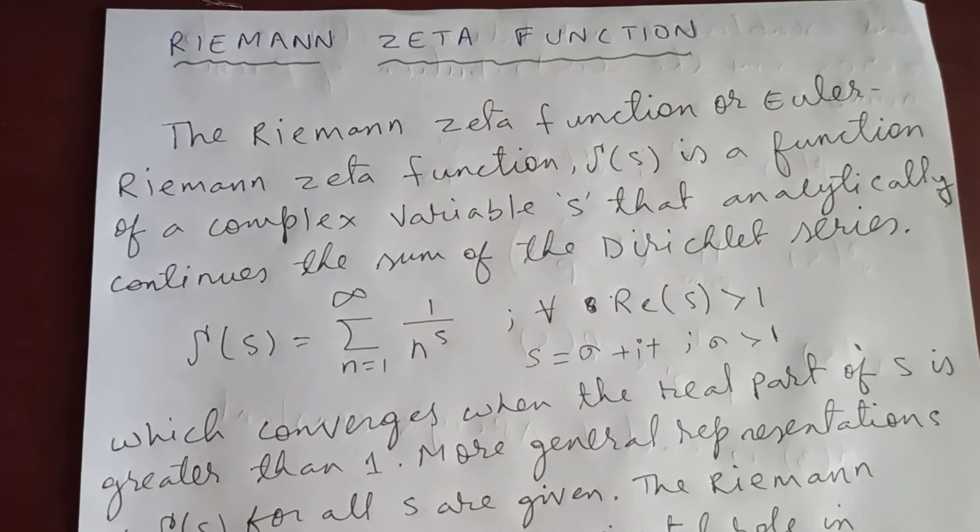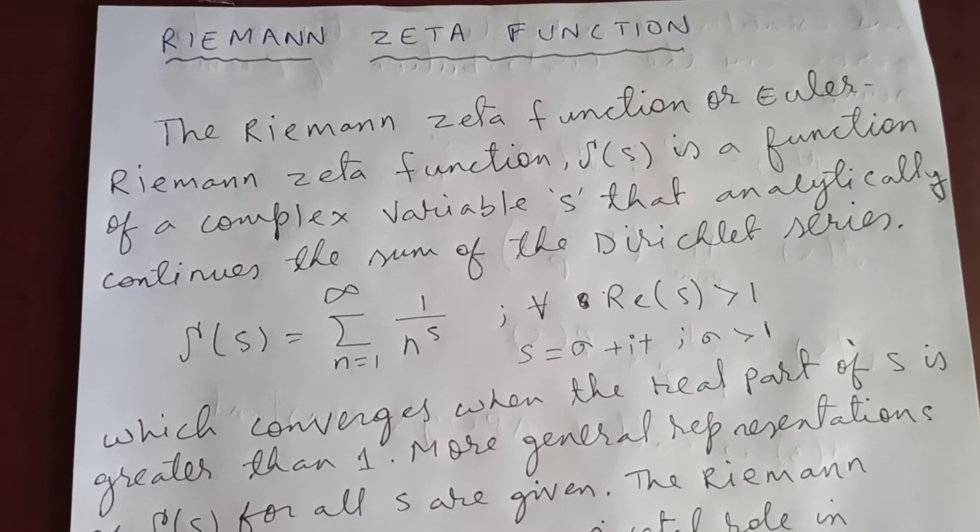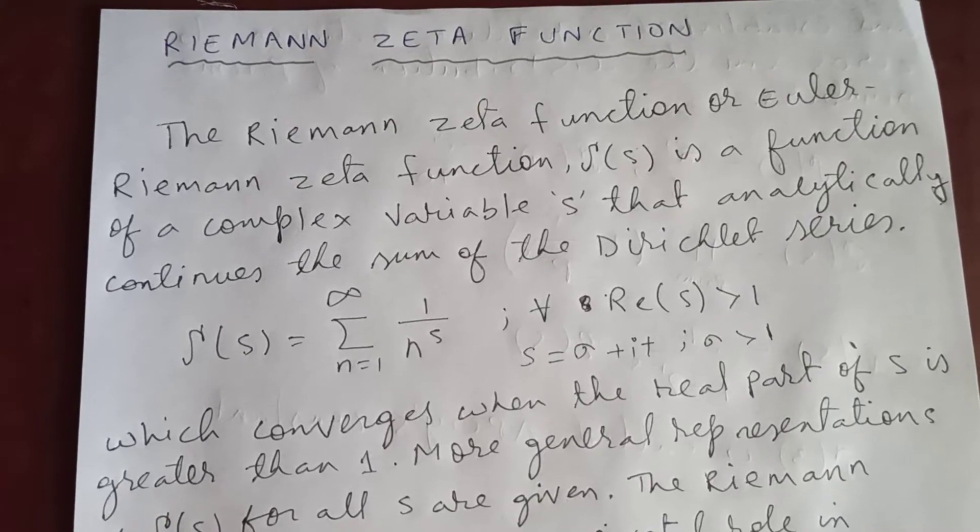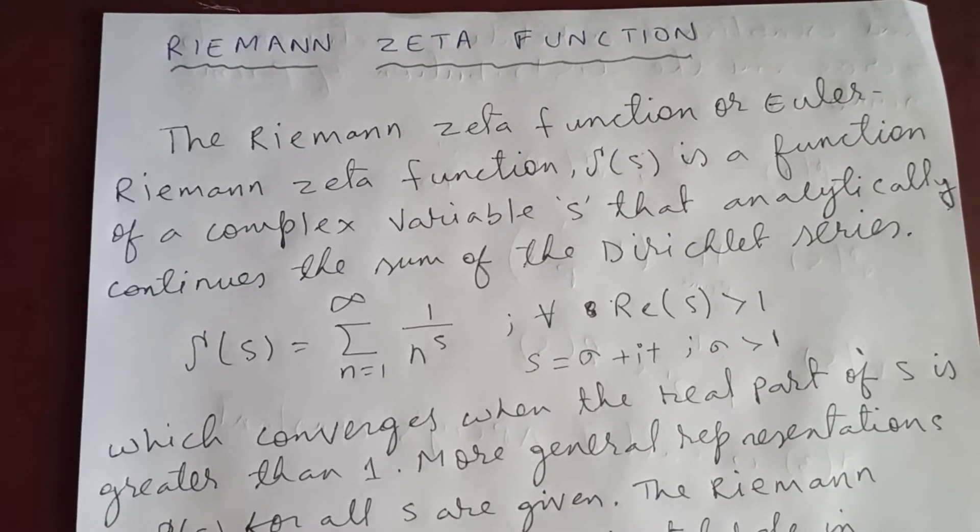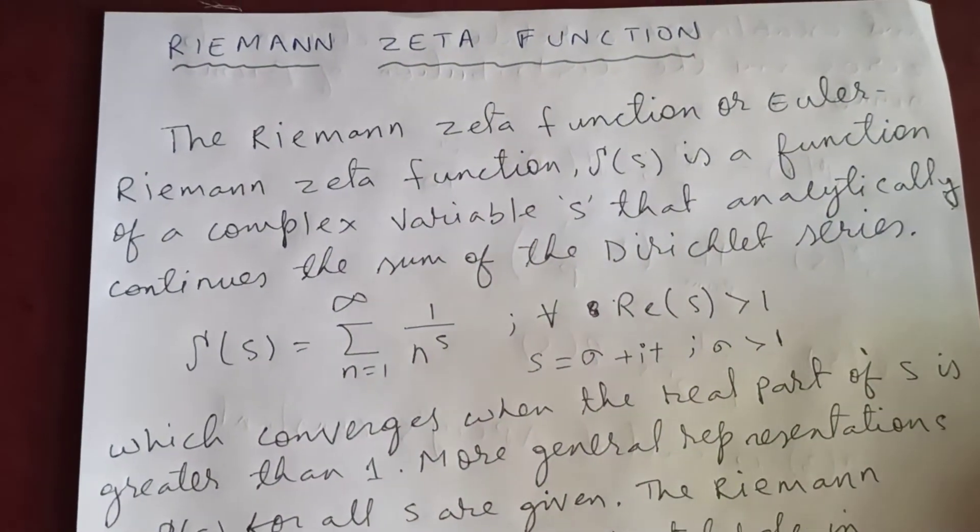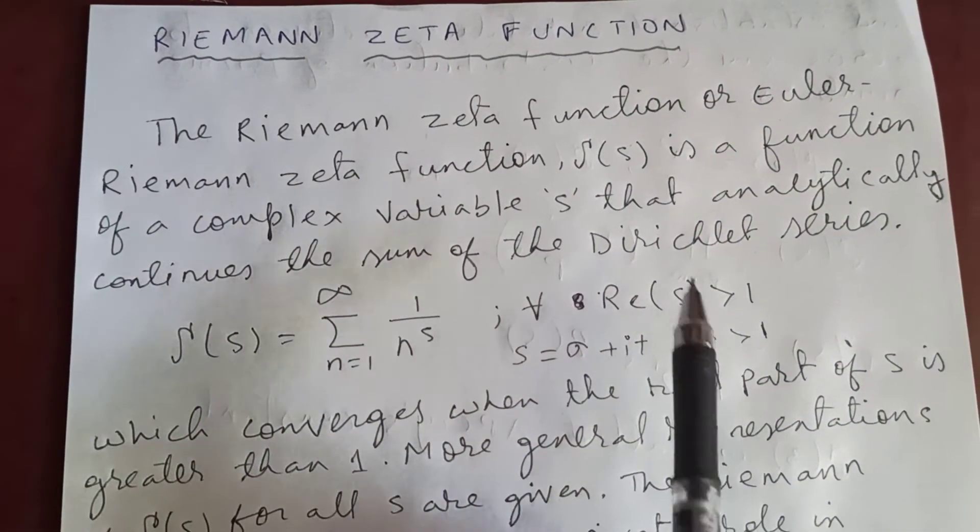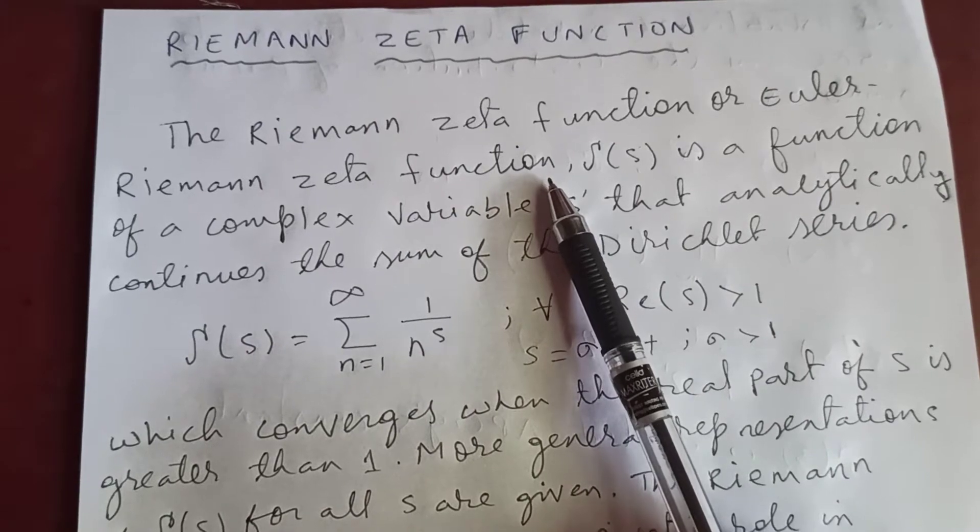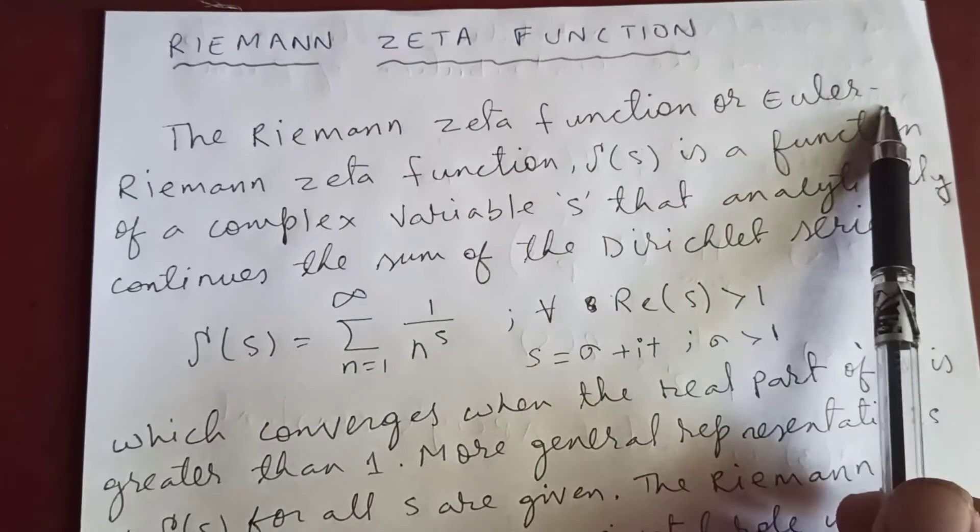Thanks for watching my video. Today we are going to discuss the Riemann zeta function. So today I'm going to just introduction only. The Riemann zeta function or the Euler-Riemann zeta function - why Euler comes first?